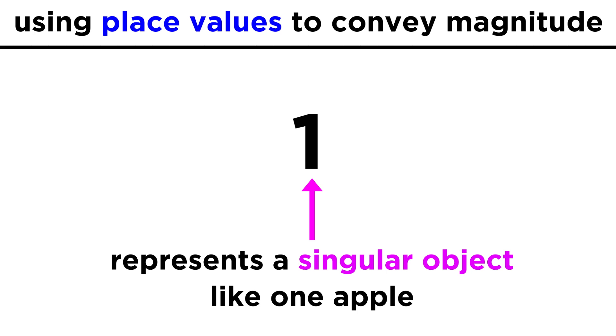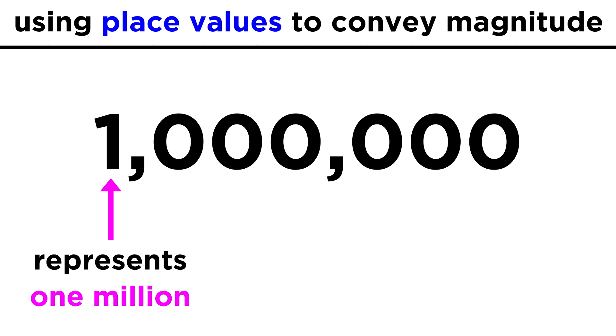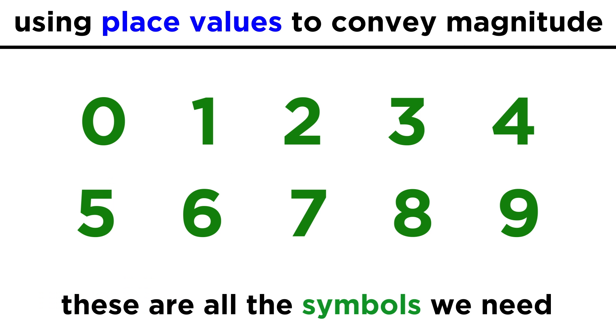If we see a one by itself, we know it is referring to a singular object, but when the one is sitting in the millions place, it takes on a whole new significance. Just a few symbols can therefore represent any whole number that can be conceived of.